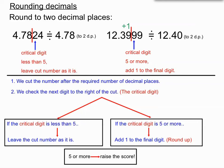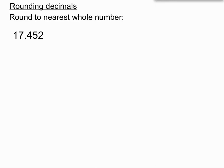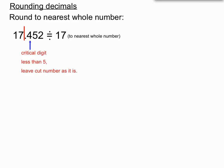Sometimes we're asked to round to the nearest whole number. I chop after the whole number part — the cut goes just after the seven. I check the critical digit: in this case it's less than five, so I leave the cut number just as it is. 17.452 rounded to the nearest whole number is just 17. I acknowledge that with an approximately equal symbol and note it's rounded to the nearest whole number.